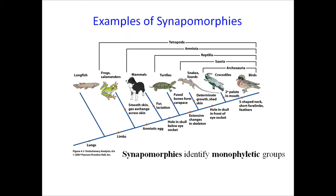Synapomorphies identify monophyletic groups sharing the same ancestors. Examples include: lungs of fish, limbs of frogs, amniotic eggs, hollow shells of turtles, skeletal changes in lizards, hollow skulls in front of eye sockets in crocodiles, and S-shaped neck with short forelimbs and feathers in birds. These are examples of monophyletic groups derived from common ancestors.